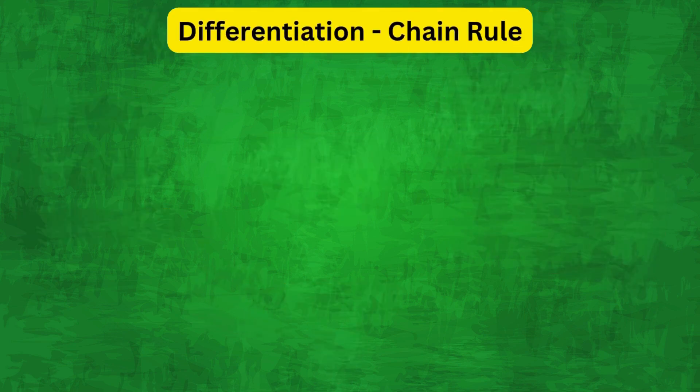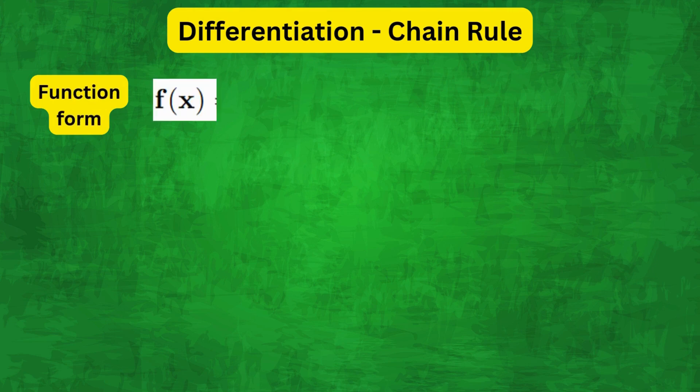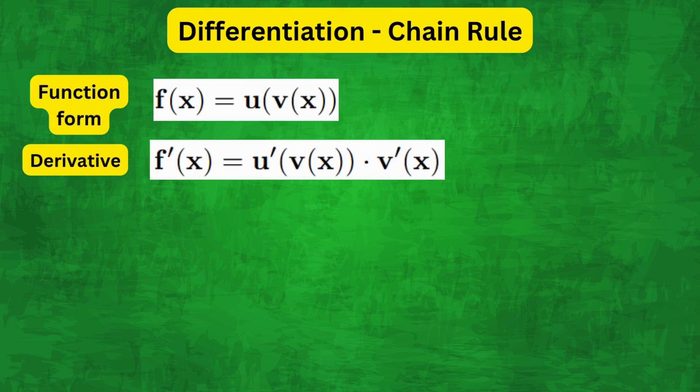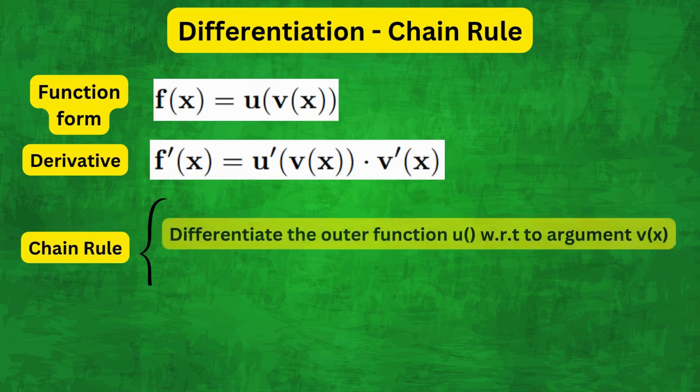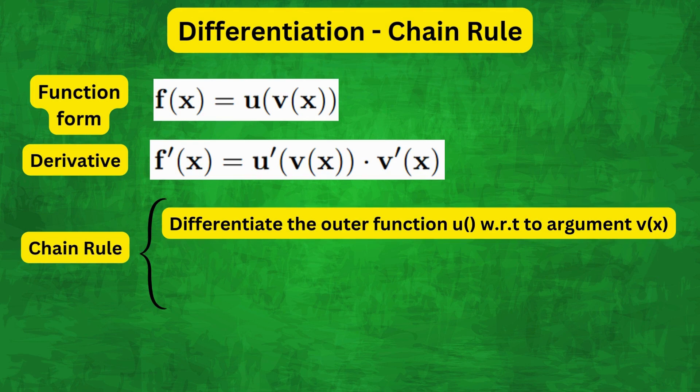Let's dive in. We will start off with the chain rule, which states that if f(x) equals u(v(x)), then the derivative f'(x) equals u'(v(x)) times v'(x). So basically, the chain rule tells us to differentiate the outer function u with respect to its argument v(x), keeping v(x) as it is, and then multiply this by the derivative of the inner function v(x) with respect to x.